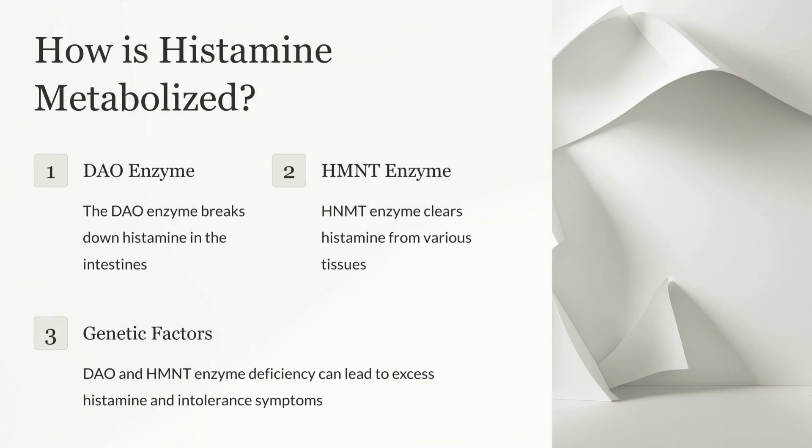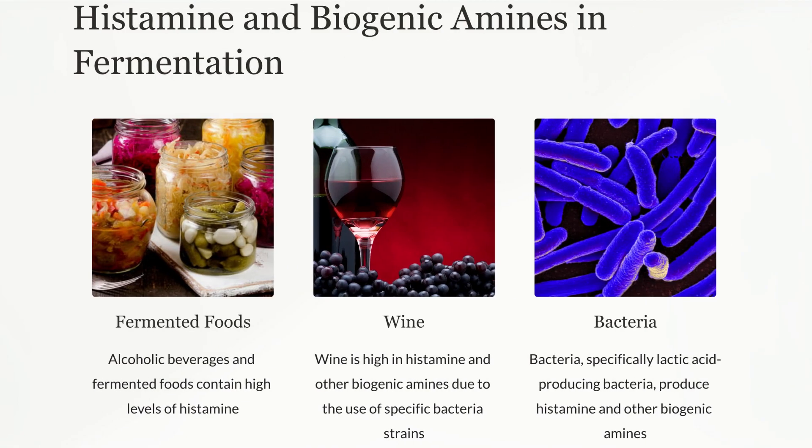There are two enzymes that metabolize histamine. The DAO enzyme breaks down histamine in the intestines, and the HNMT enzyme clears histamine from various tissues. Genetics influence DAO and HNMT enzyme production. Enzyme deficiency can lead to excess histamine and increased intolerance symptoms.